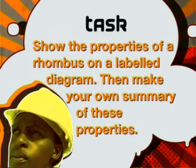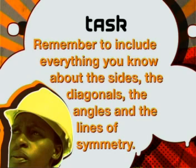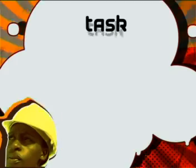Show the properties of a rhombus on a labeled diagram, then make your own summary of these properties. Remember to include everything you know about the sides, the diagonals, the angles, and the lines of symmetry.